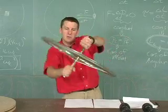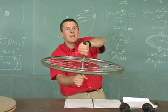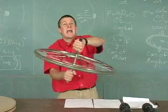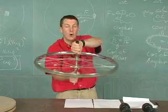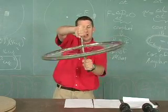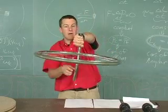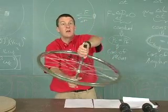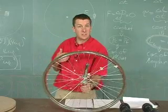Now, when I inverted the wheel, I had to produce a torque. I had to cause this object to rotate around an axis horizontal here. But the torque was internal to the system.